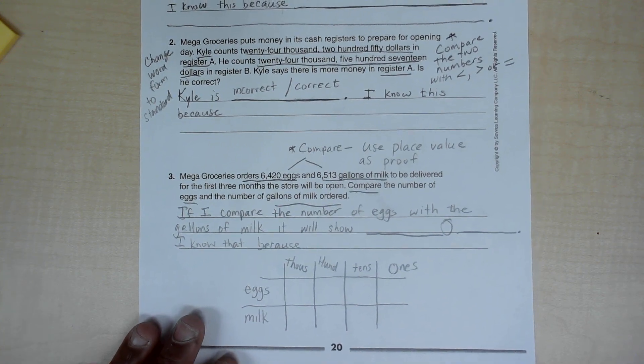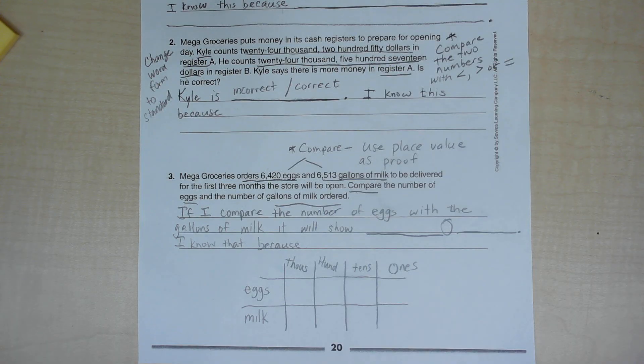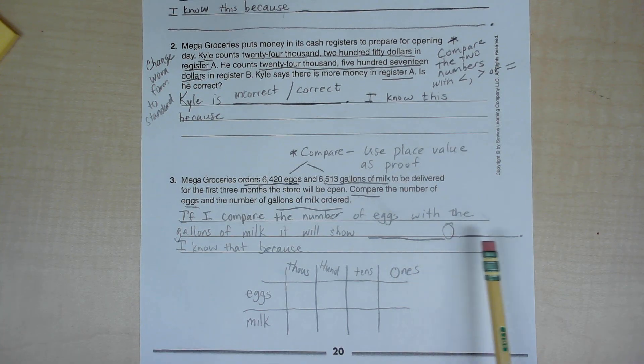Mega Groceries orders 6,420 eggs and 6,513 gallons of milk to be delivered for the first three months the store will be open. Compare the number of eggs and the number of gallons of milk ordered. If I compare the number of eggs with the gallons of milk, it will show blank and blank.